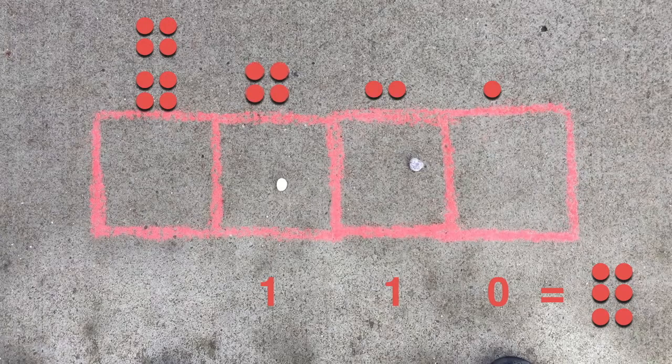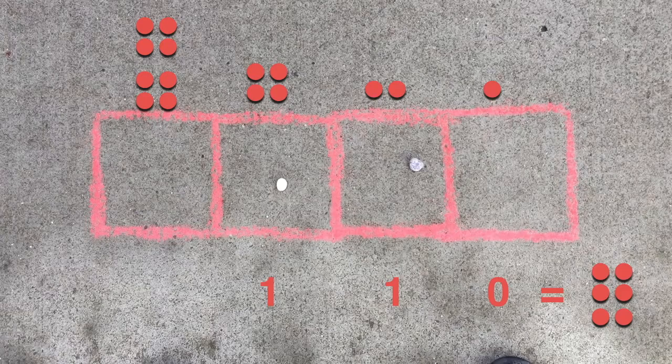Working backwards, we have a four and a two, which add up to six, the number we started with.